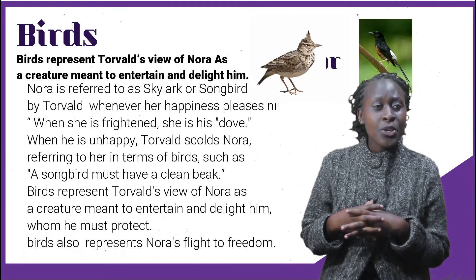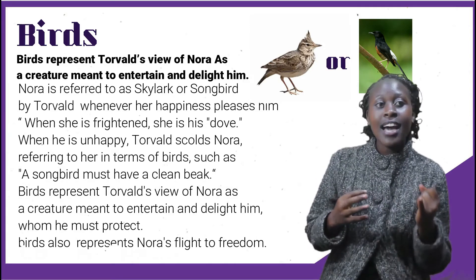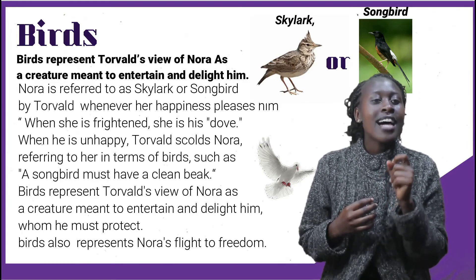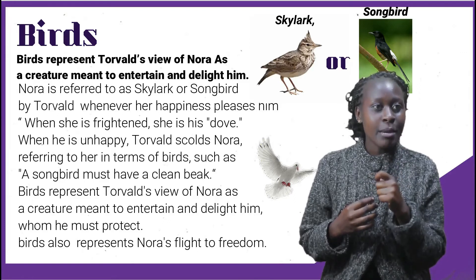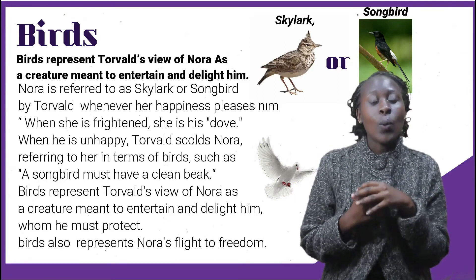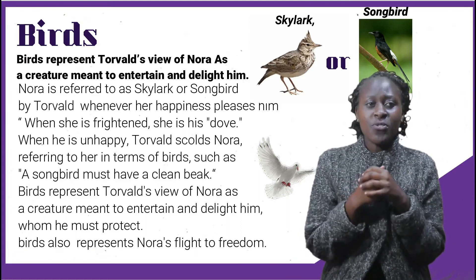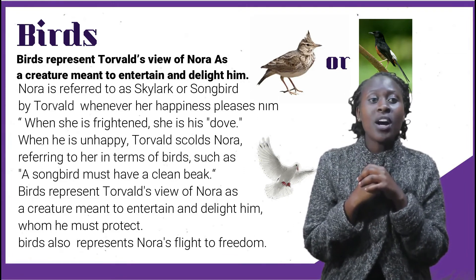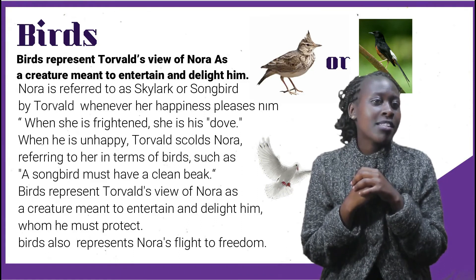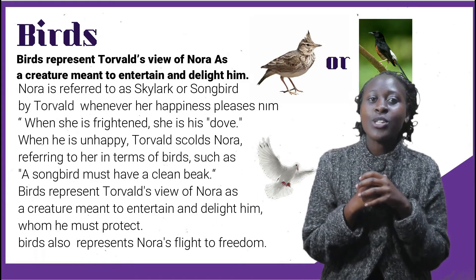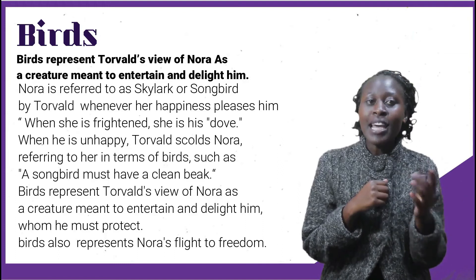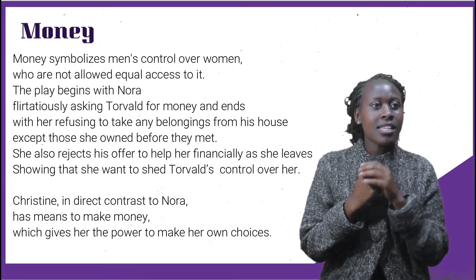Birds are another symbol in Ibsen's A Doll's House. The birds mentioned include the skylark, the songbird, and the dove. They represent Torvald's view of Nora as a creature meant to entertain and delight him. Nora is referred to as skylark or songbird by Torvald whenever her happiness pleases him; when she is frightened she is his dove. When he is displeased, Torvald scolds Nora using bird terms such as 'a songbird must have a clean beak.' The birds also represent Nora's flight to freedom, as she is like a caged bird kept from freedom throughout the play but escaping by the end.